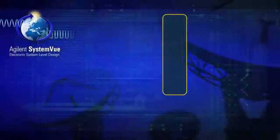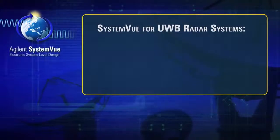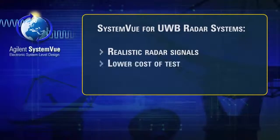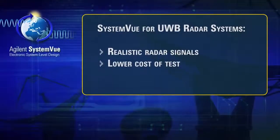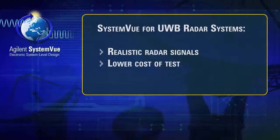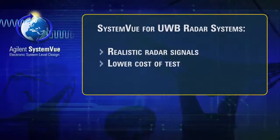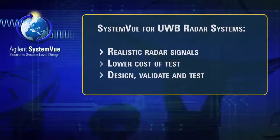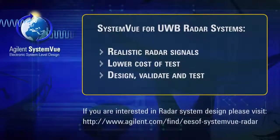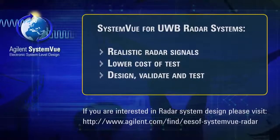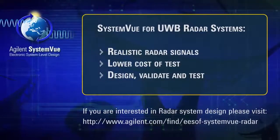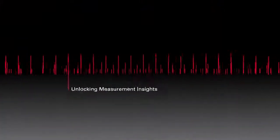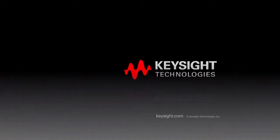We have shown how Agilent SystemVue along with Agilent test equipment is used to generate realistic UWB signals. This dramatically lowers the cost of testing radar systems and allows you to test at your convenience. SystemVue is a powerful system-level design tool that takes you from design through validation and test of communications and defense systems. If you are interested in radar system design, please visit www.agilent.com.